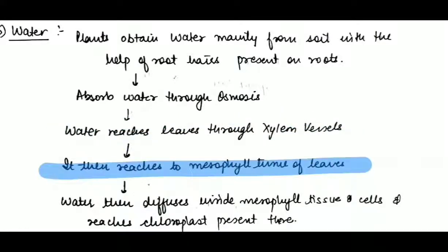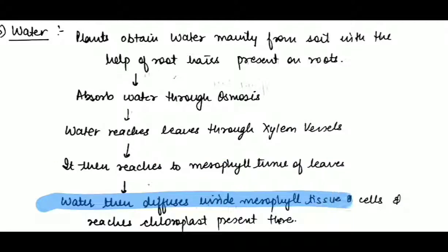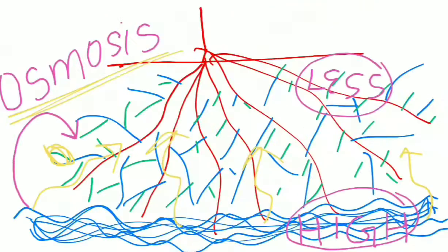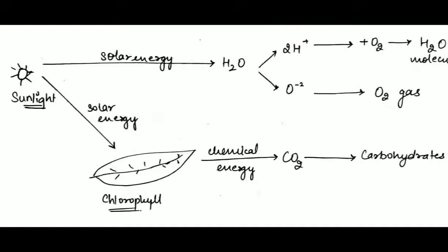Finally, the water reaches the mesophyll tissue of the leaf, where chloroplasts containing chlorophyll are present. The sunlight falls and is absorbed by the chlorophyll pigment. The solar energy then splits the water molecule into hydrogen and oxygen. Water diffuses inside the mesophyll cells and reaches the chloroplast present there, and the splitting up of water molecules takes place inside the leaves.